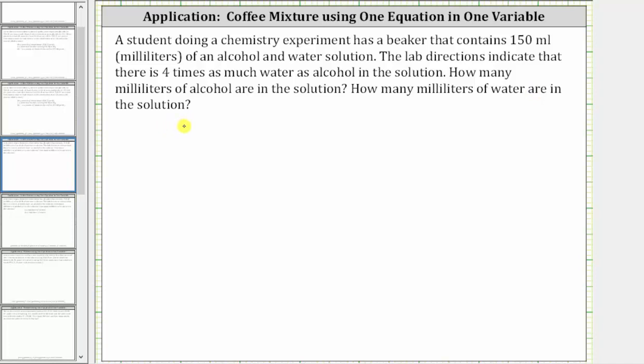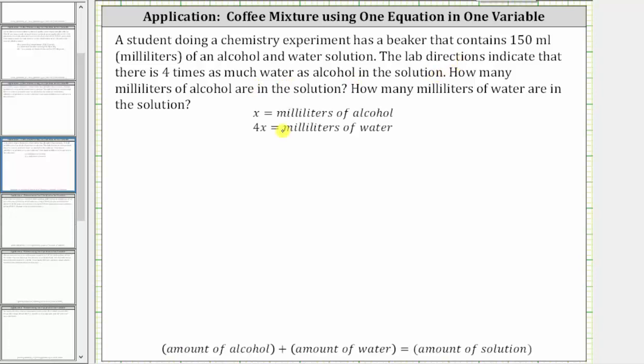We need to begin by writing expressions for the amount of alcohol and water in the solution. Since we are told there is four times as much water as alcohol in the solution, we will let x equal the milliliters of alcohol, and therefore four times x, or 4x, is equal to the milliliters of water.